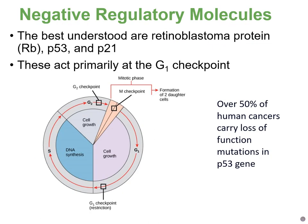There are also negative regulatory molecules that prevent cell cycle advancement. The most well-known negative regulatory proteins include retinoblastoma protein (RB), p53, and p21. These primarily prevent advancement past the G1 phase of the cell cycle.